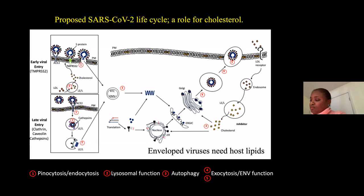There appear to be two points of entry of the COVID virus into the cell. An early viral entry dependent on the TMPRSS2 protein, which associates with cholesterol-rich microdomains of the plasma membrane and is then taken into the cell by pinocytosis. There's also a late-entry stage dependent on clathrin, caveolin, and cathepsin, which represents a receptor-mediated endocytosis step. Both of those steps are very sensitive to the lipid environment of the plasma membrane and also of the lysosome, particularly the cholesterol environment.